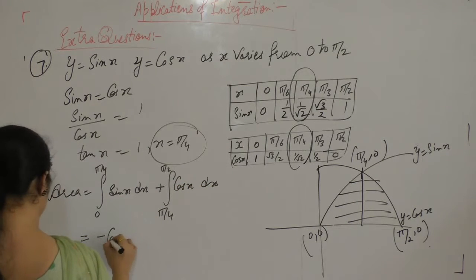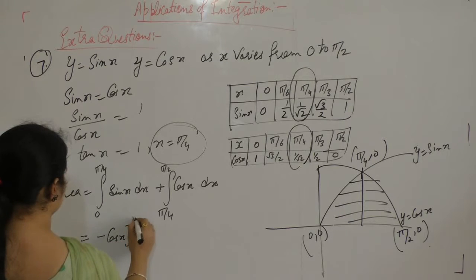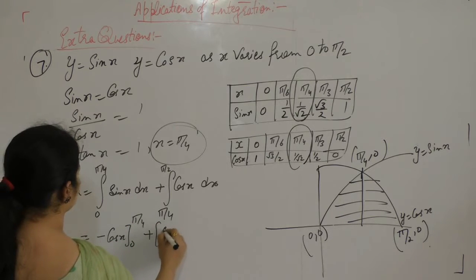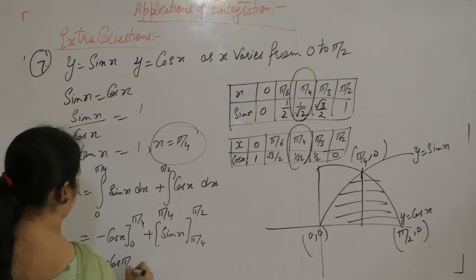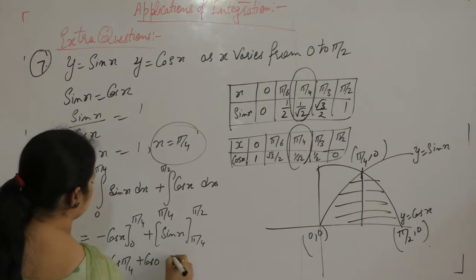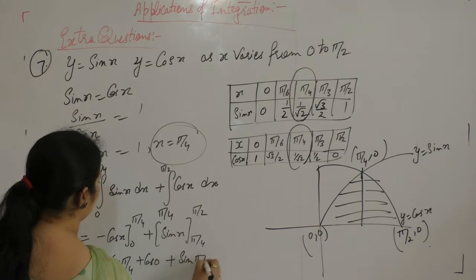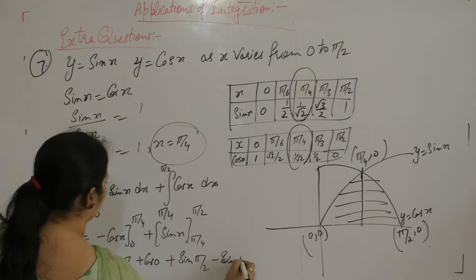Integral of sin is minus cos x, and integral of cos is sin x. Minus cos π by 4, minus minus plus cos 0, plus sin π by 2, minus sin π by 4.